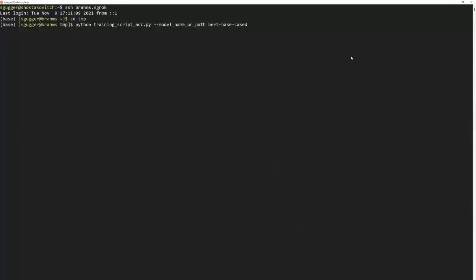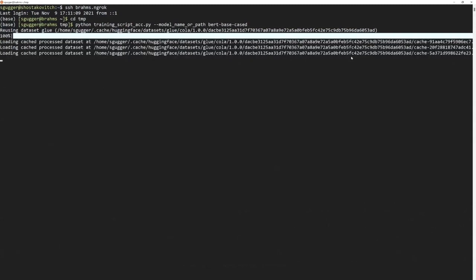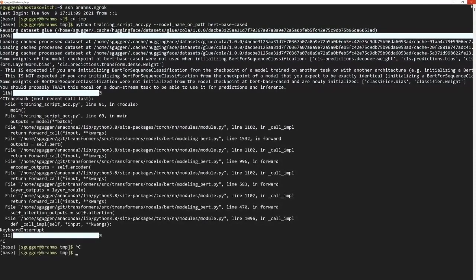But your script can still be launched as a regular Python script if you need to debug. It works regardless of whether you have a GPU or not. You can use accelerate launch to launch your script on several GPUs or on TPUs. You can still use the Torch distributed launcher instead of accelerate launch if you prefer. All in all, with just learning one new API which added four new lines of code, your custom training loop can now run on any kind of distributed setup.